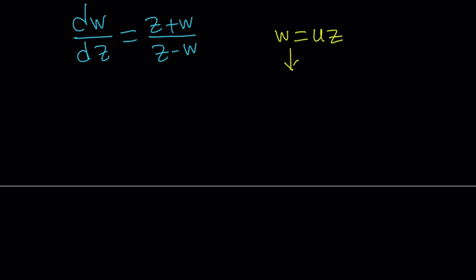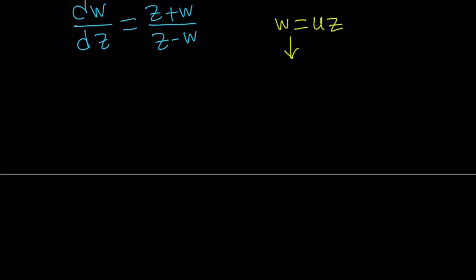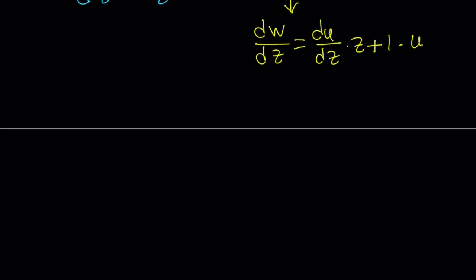But before we get into the substitution, let's go ahead and differentiate both sides here to find dw over dz, which we're going to use the product rule for the derivative of u with respect to z multiplied by z plus the derivative of z with respect to z, which is 1, by the way, times the first function u. So, let's arrange this a little bit, like make it a little nicer. dw over dz can be written as z times du over dz plus u. Awesome.